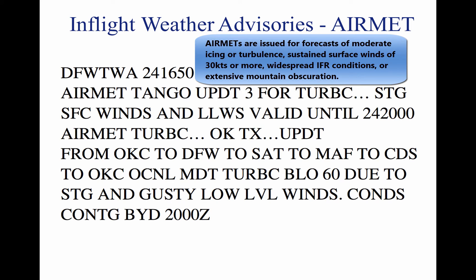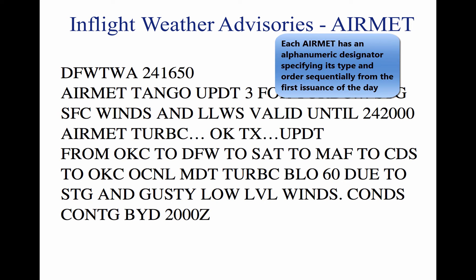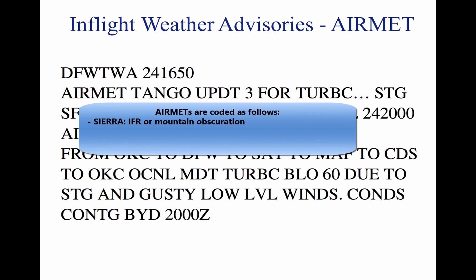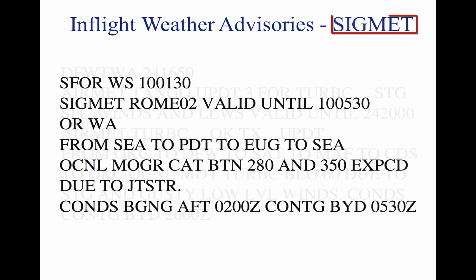An AIRMET includes forecasts of moderate icing, moderate turbulence, sustained surface winds of 30 knots or greater, widespread areas of ceilings less than 1,000 feet and/or visibilities less than 3 miles, and extensive mountain obscurement. Each AIRMET bulletin has a fixed alphanumeric designator numbered sequentially beginning with the first issuance of the day. Sierra is the AIRMET code for IFR and mountain obscuration; Tango is used for turbulence, strong surface winds, and low-level wind shear; and Zulu is used for icing and freezing levels.